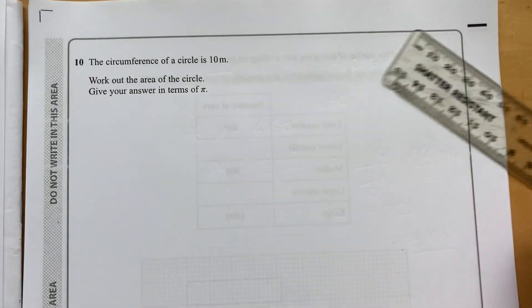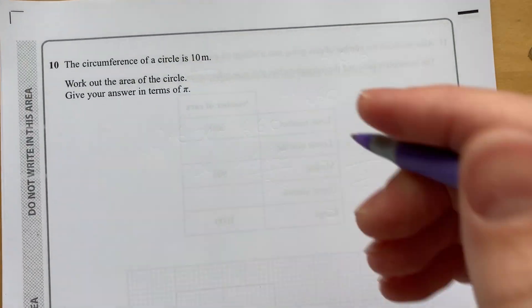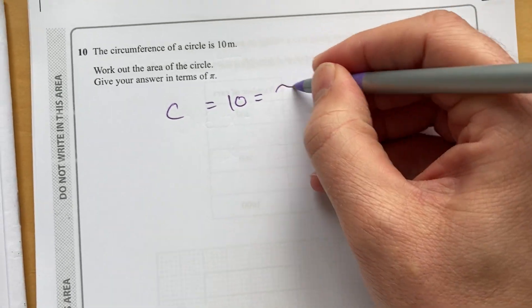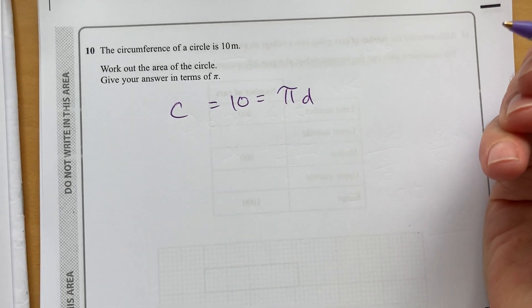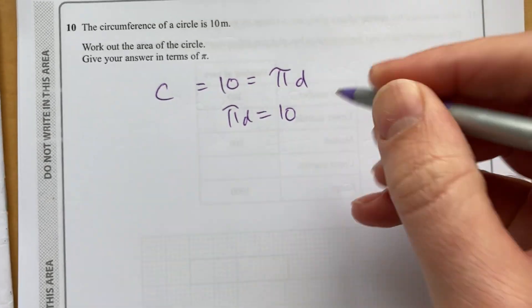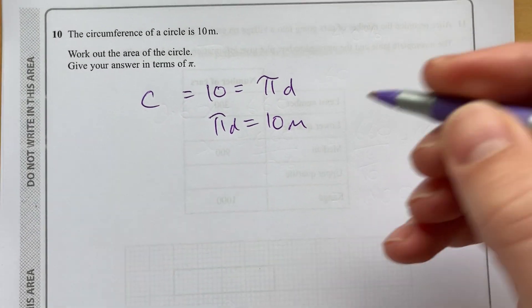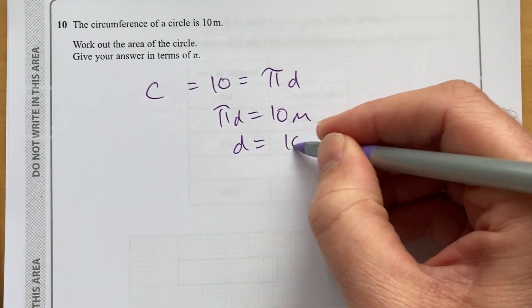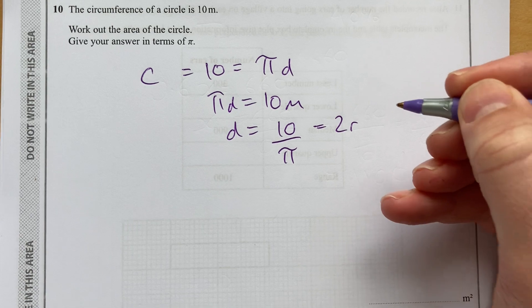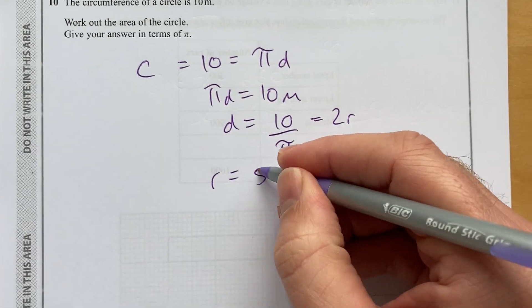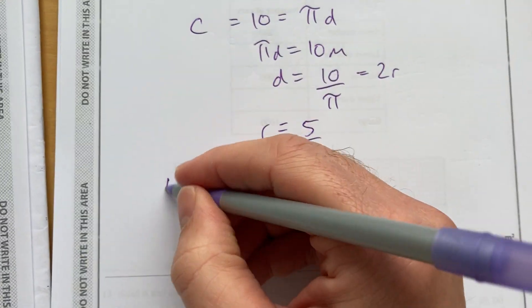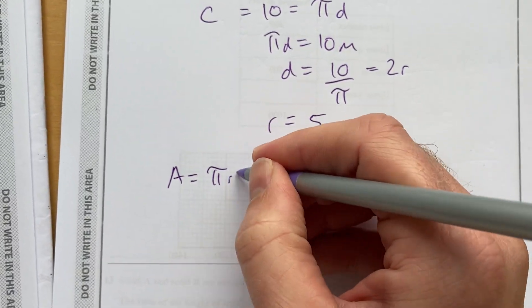Question 10 is a circle question. The circumference of a circle is 10 meters. We know that's pi d. So, then I know that if pi d equals 10 meters, then d equals 10 over pi. d is also 2r. So, r will equal 5 over pi.